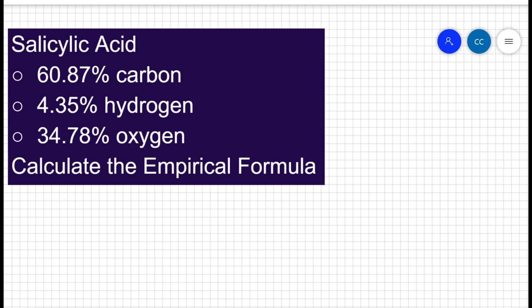Because if I have a 100 gram sample, then my 60.87% of carbon becomes 60.87 grams of carbon, and my 4.35% hydrogen becomes 4.35 grams of hydrogen, and then 34.78 grams of oxygen. If you have a 100 gram sample, the percentages just simply turn into grams.